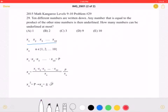Then I have written this number, x sub n, which is going to be one of the numbers that is underlined. And as it says in the problem, any number that is equal to the product of the other nine numbers is then underlined. So, x sub n, a number that is underlined, must be one of the ten numbers.